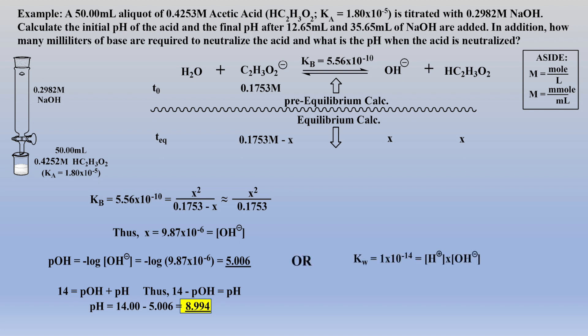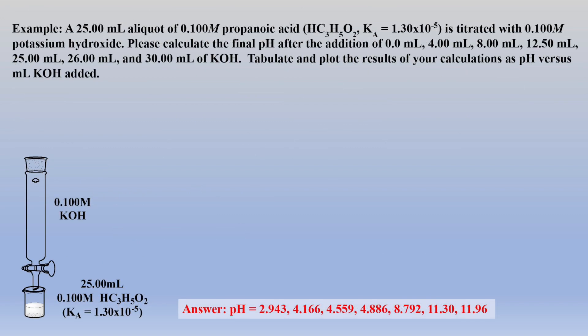Alternatively, once the hydroxide concentration is calculated, it can be converted to a proton concentration, followed by a pH calculation. Please take a moment to review how all the sig fig rules within these calculations were followed. As an exercise to further reinforce this material, it is suggested that students do the final pH calculations when various amounts of potassium hydroxide are added to the weak acid propanoic acid. The answers are given with correct significant figures.